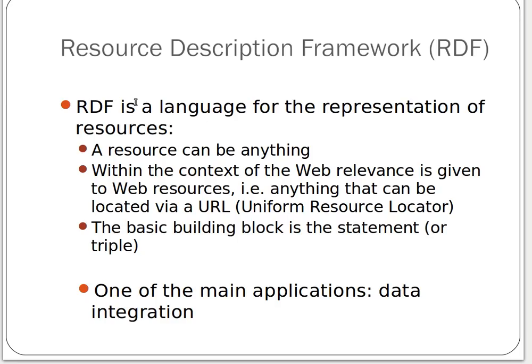RDF is a language — it's a data model, not a data format — and it's there to represent resources. What is a resource? Well, a resource can be anything: a person, a book, a car, a computer, a machine, planet Earth, the Sun, the moon, the stars. Anything you can think of can be a resource. In our context here we speak about web resources, but in general it can be any thing. When we say web resources we mean, for example, anything that can be located via a URL.